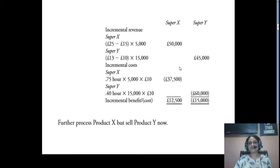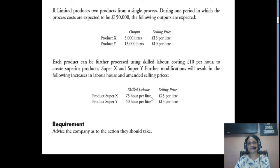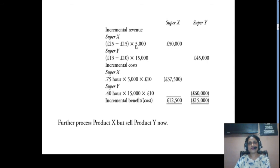Again, we are considering the incremental cost and incremental benefit. The incremental revenue for Super X: 5,000 litres multiplied by (£25 − £15) = £50,000. For Super Y: (£13 − £10) = £3 incremental revenue multiplied by 15,000 litres = £45,000. So incremental revenue for Super X is £50,000 and for Super Y it is £45,000.